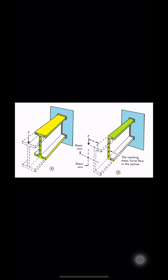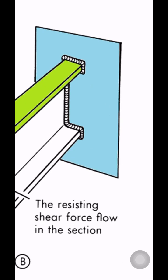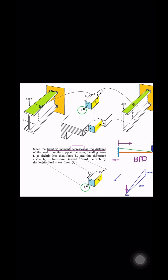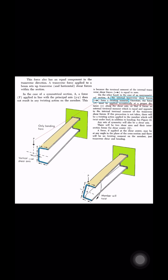In the case of symmetrical section, force p is applied in line with the principal axis and does not result in any twisting action on the member. This is because the torsional moment of internal transverse shear force is equal to zero.